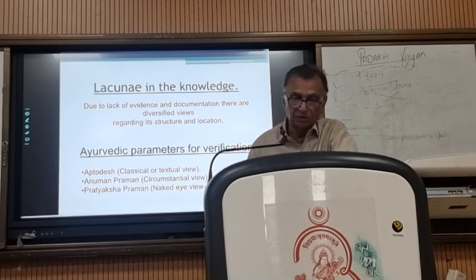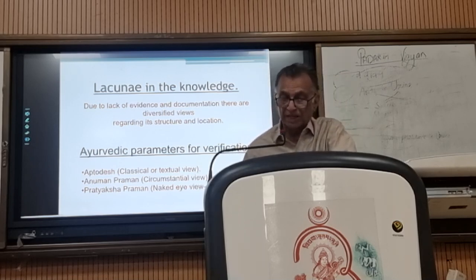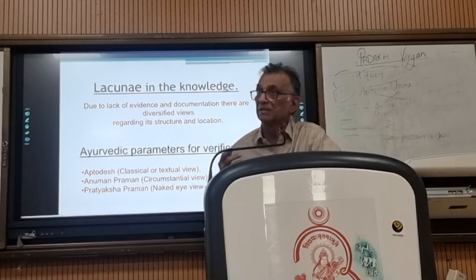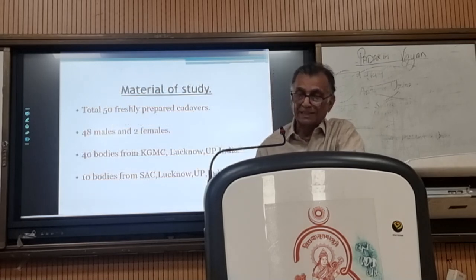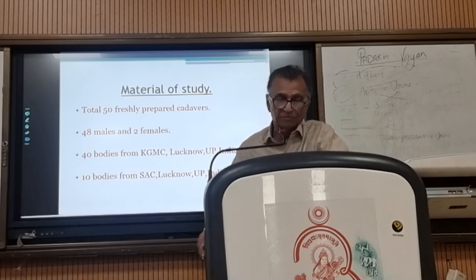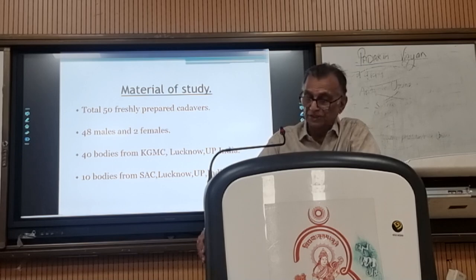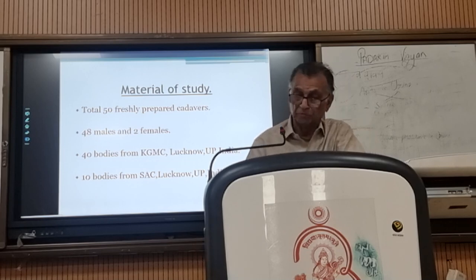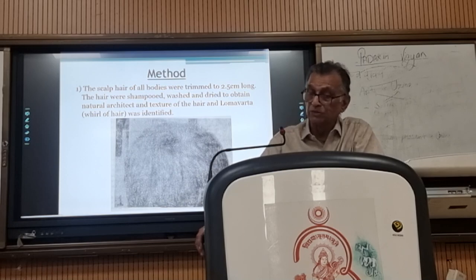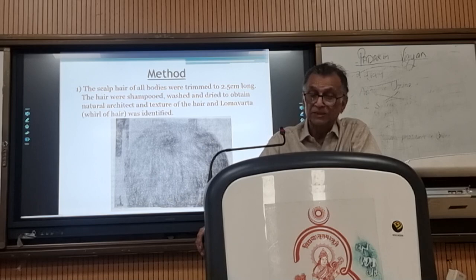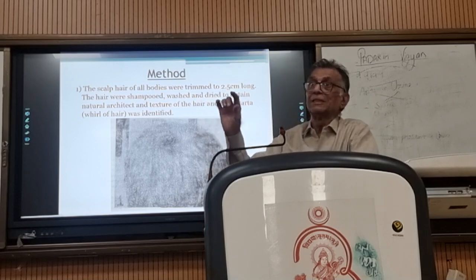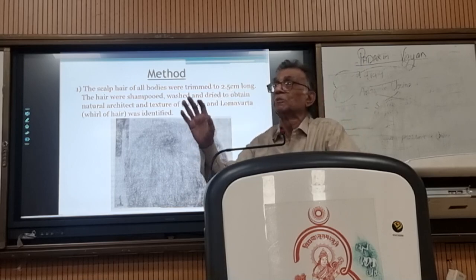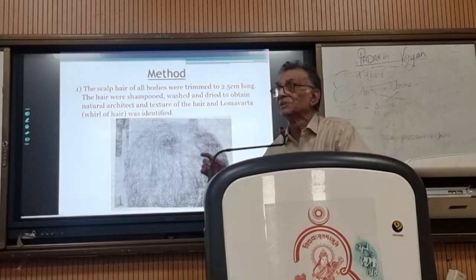The three Pramas: one is the classical or textual view. Anumana is the circumstantial evidence or view. And the Prataksha Prama is the naked eye view, that is micro or macro. Material of study: total 50 freshly prepared cadavers, 48 males and two females — 40 bodies from KGMC Lucknow, UP, India, and 10 bodies from SAC, Lucknow, UP, India. The first point of identification of Adhipati Marma is the Lomavartha.